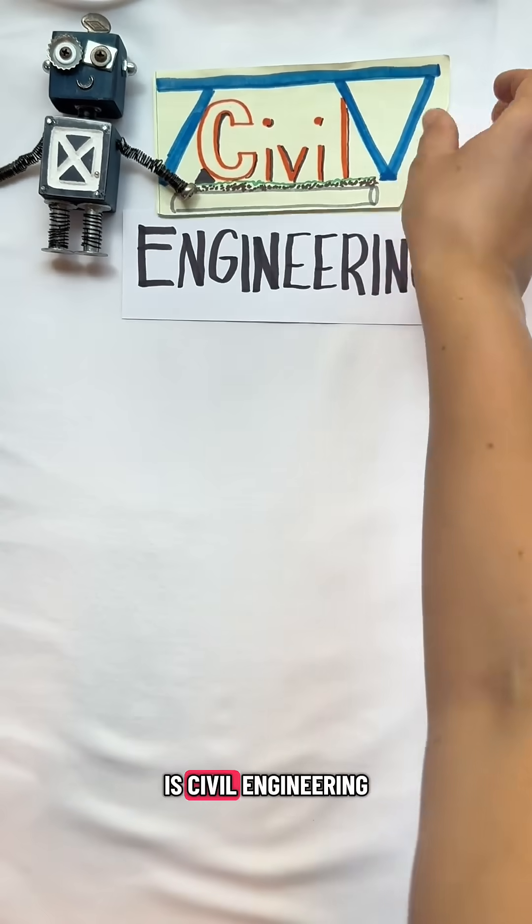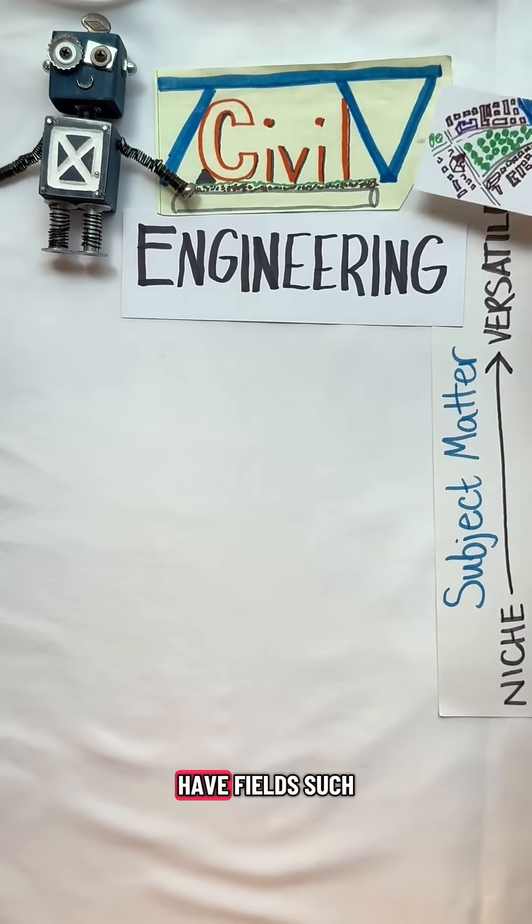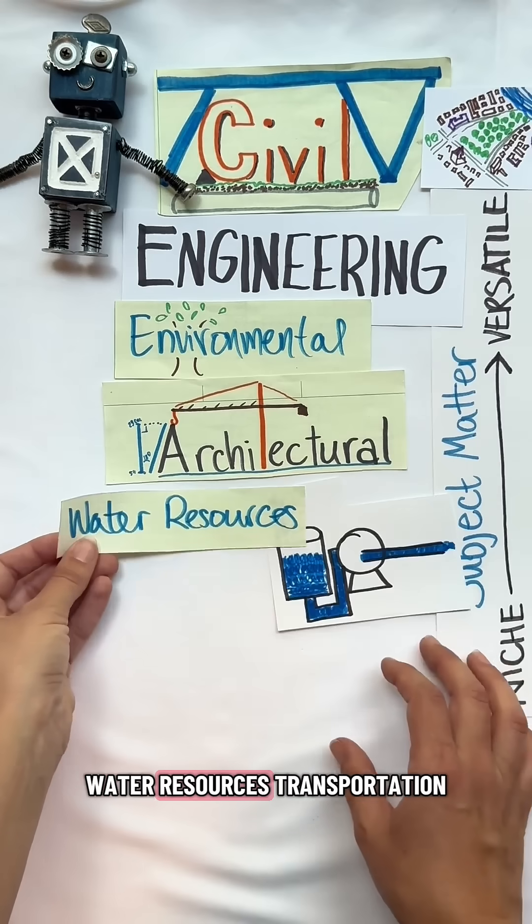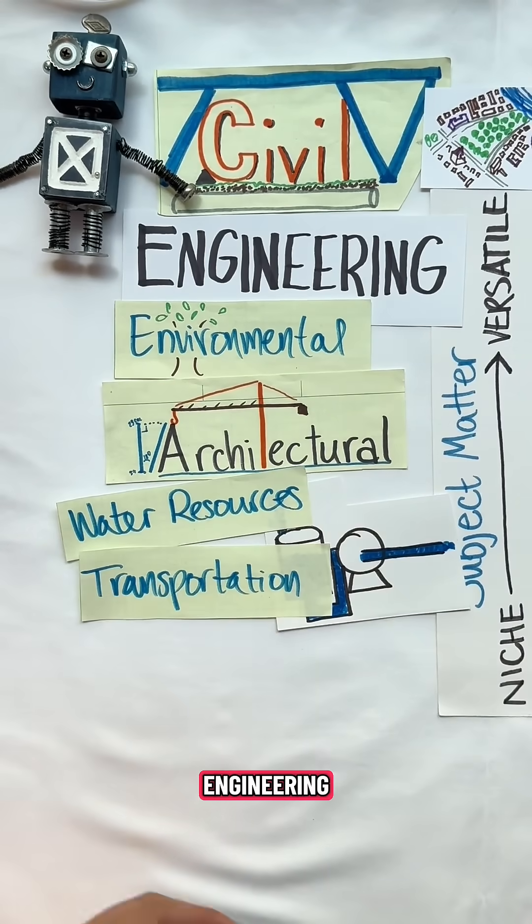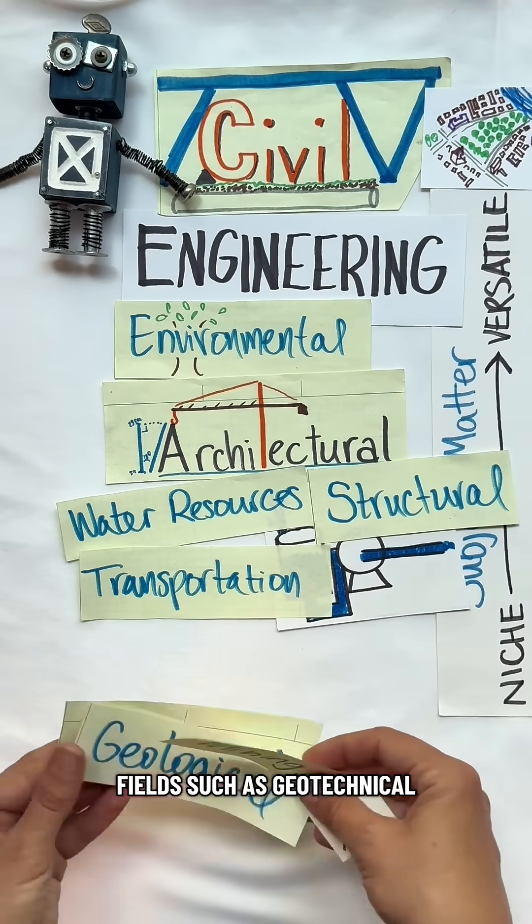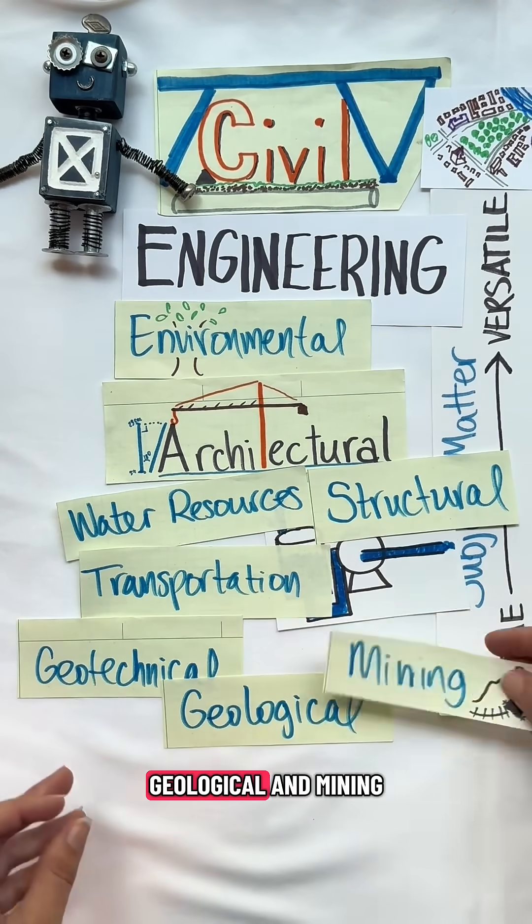The last of the big four is civil engineering. Under civil, you have fields such as environmental, architectural, water resources, transportation engineering, structural engineering, and fields such as geotechnical, geological, and mining.